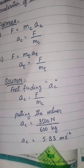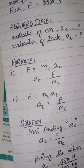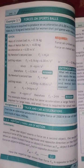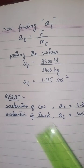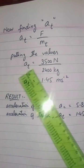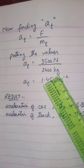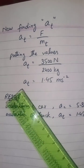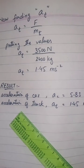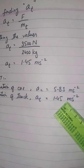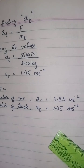Dividing these two values, we get the acceleration of the car: ac equals 5.83 meter per second square. Next, for the acceleration of the truck: at equals F divided by mt, which gives 3500 divided by 2400 equals 1.45 meter per second square. Result: ac = 5.83 m/s² and at = 1.45 m/s².